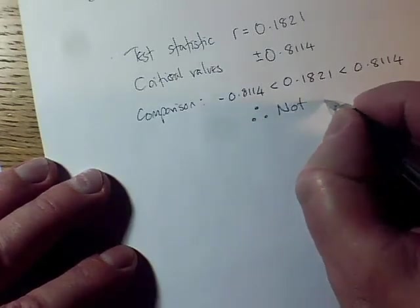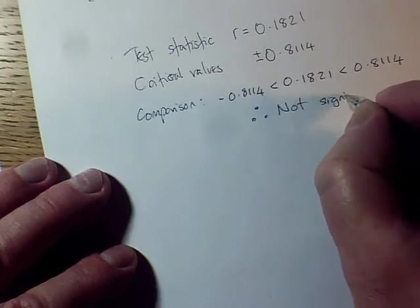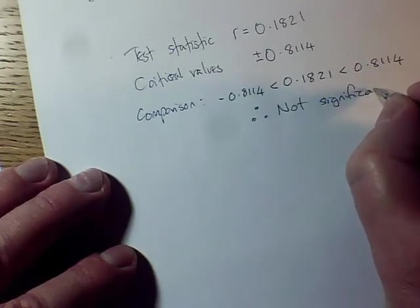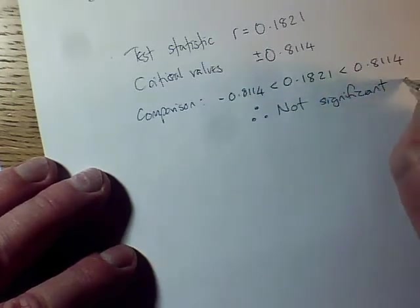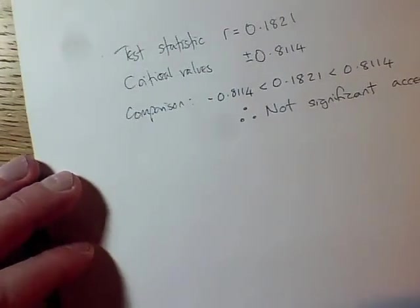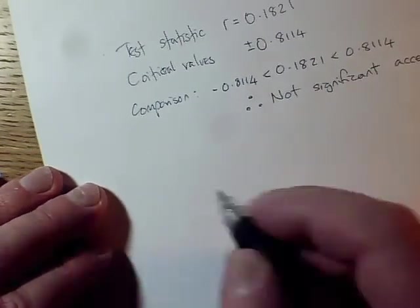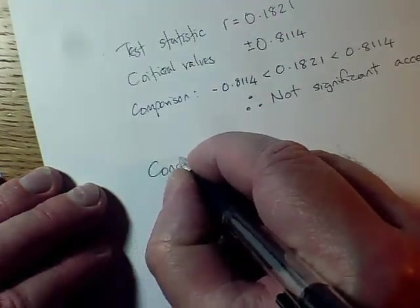We say this is not significant, it didn't get into the critical region, and therefore we can say that we're going to be accepting H0. That's in the technical language, but we need to actually draw our conclusion. So that's stage five.